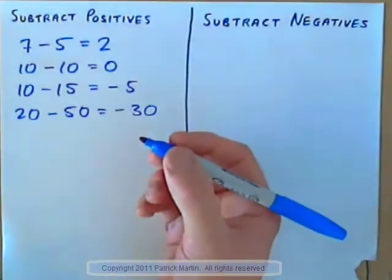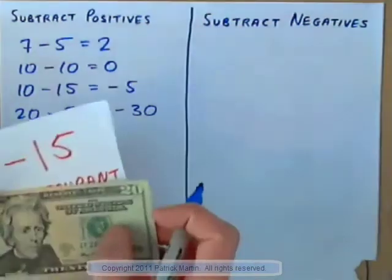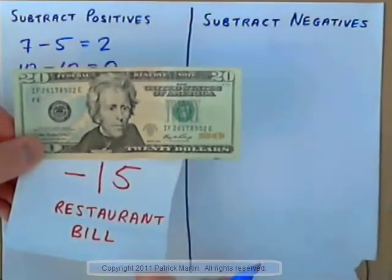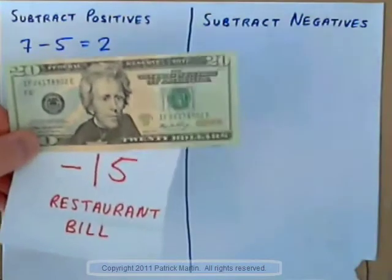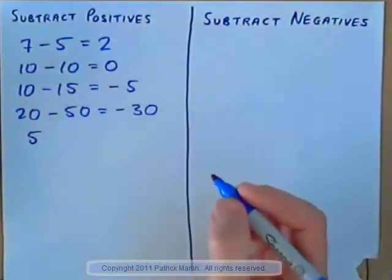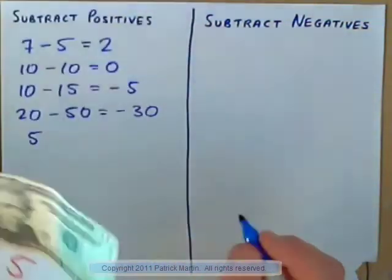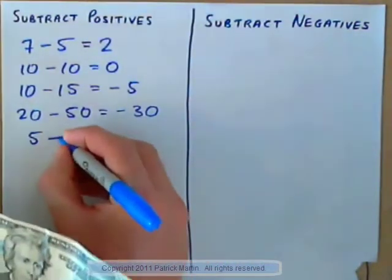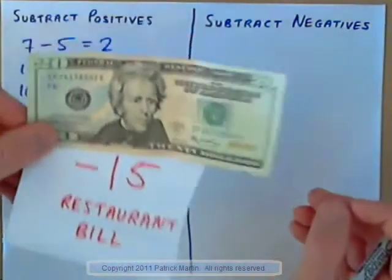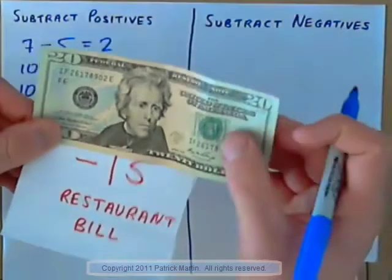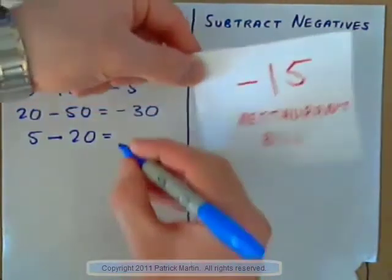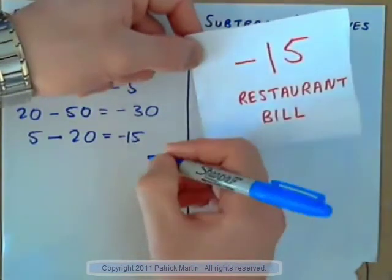Let's have a look. If you have in your hand a $20 note and a $15 bill at a restaurant — what does that make altogether? That's $5. Now, subtract means take away. $5 take away 20: if I was to take away positive 20, I'd take away 20, and you'd be left with negative 15. So $5 take away 20 is negative 15.